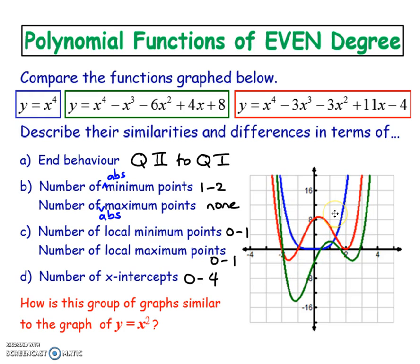If it just went down like this, you could have three - that's the red one, one, two, three - or you could have four x-intercepts like the green one, two, three, and four.